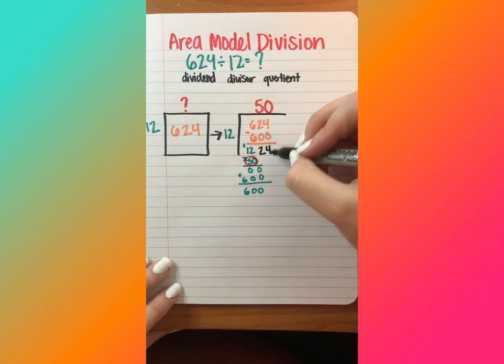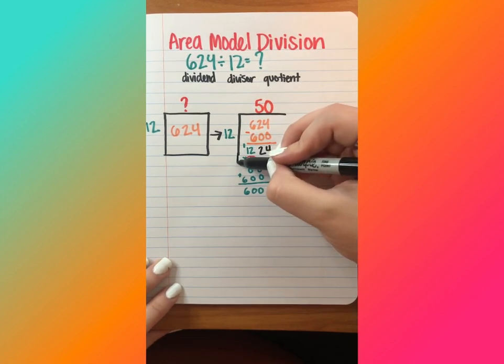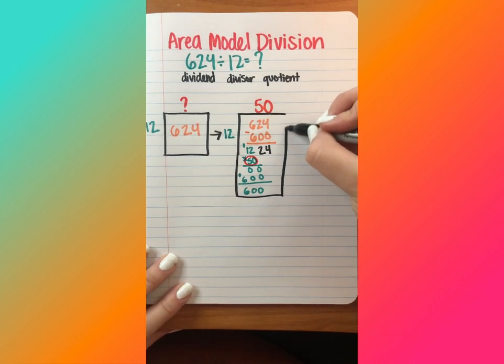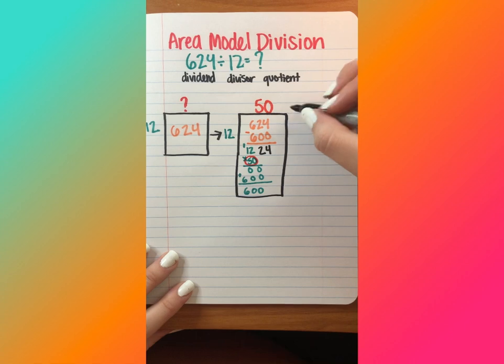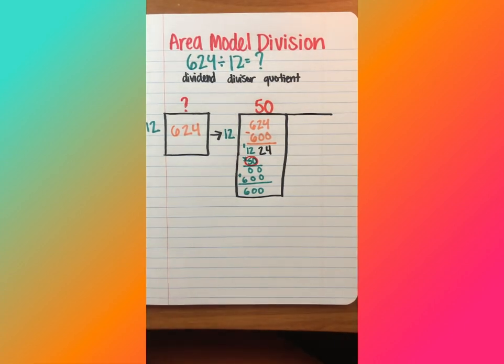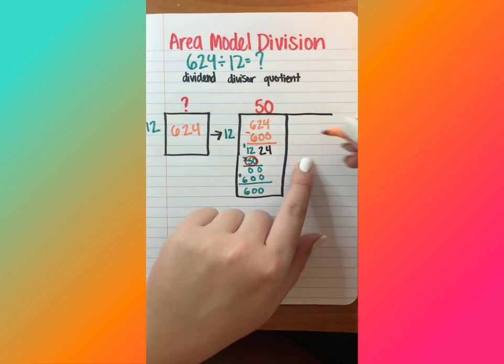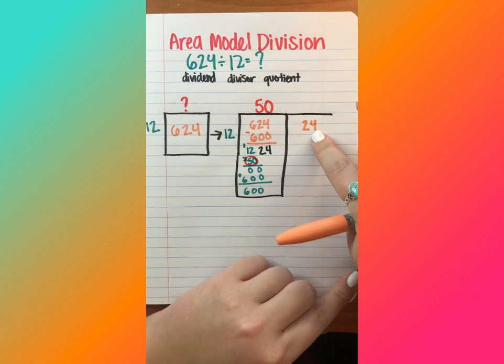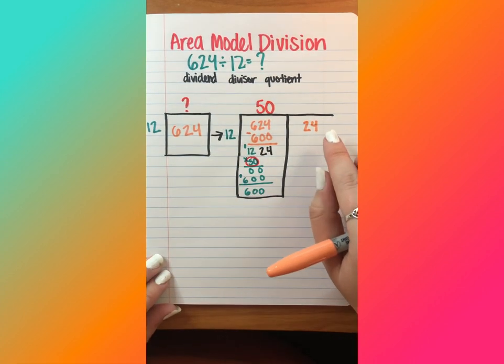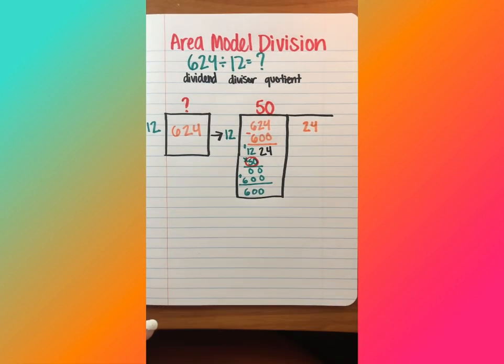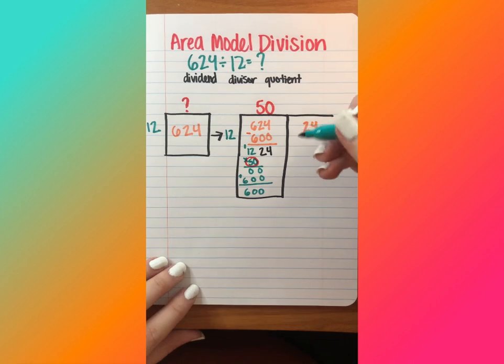Okay, so whatever my result is from my subtraction problem in my box is what's going to move on to the next box. So that 24 is what's left over. So I'm going to go ahead and extend my division house a little bit bigger. And I'm going to write my new number or my new dividend, which is 24 in my new box. So I already know because of my times tables that 12 goes into 24 two times, but it's always a good idea to show our work, especially if our teacher is asking us to.